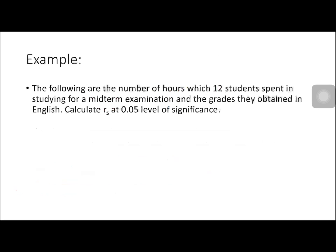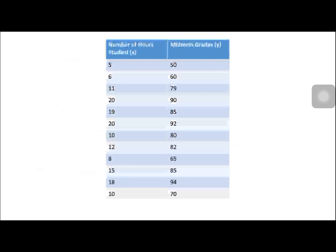For our example, the following are the number of hours which 12 students spent studying for a midterm examination and the grades they obtained in English. Calculate RS at the 0.05 level of significance. The number of hours spent in studying will be our X, and the midterm grades will be our Y.